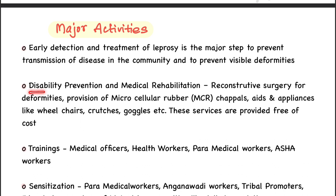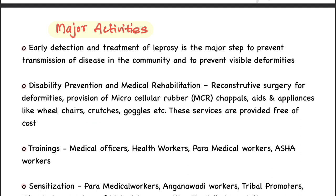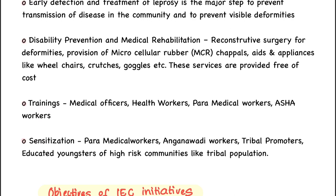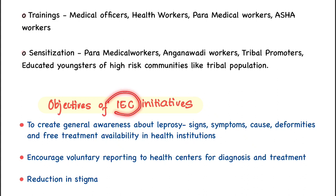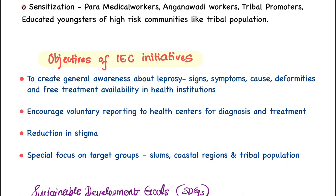Major activities include early detection and treatment of leprosy to prevent transmission and deformities. Disability prevention and medical rehabilitation include reconstructive surgery for facial and limb deformities, provision of microcellular rubber (MCR) chapels, and aids and appliances like wheelchairs, crutches, and goggles — all provided free of cost. Training is provided to medical officers, health workers, paramedical workers, and ASHA workers, along with sensitization programs for tribal promoters and high-risk communities.